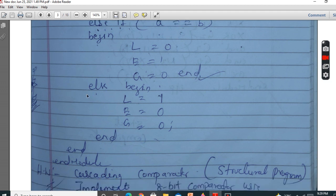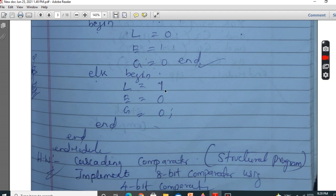Similarly, last case, else begin. Else begin, it means it is less than. So L is equal to 1, E is equal to 0, G is equal to 0. End. This is always end, end module.